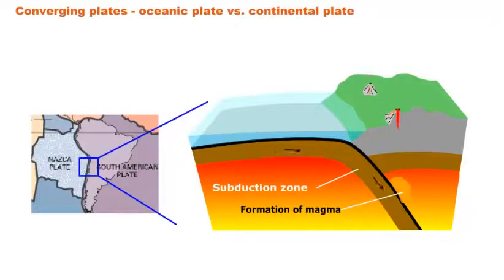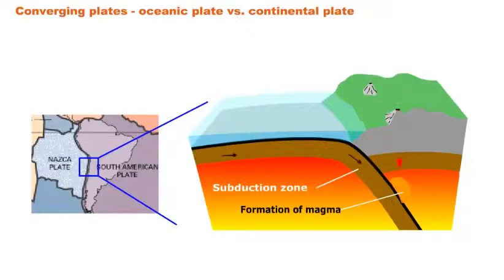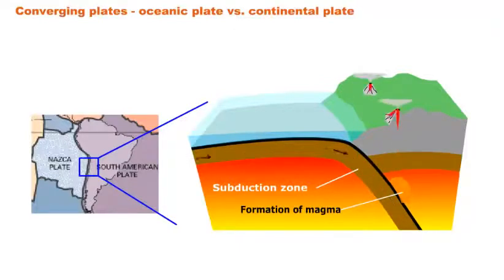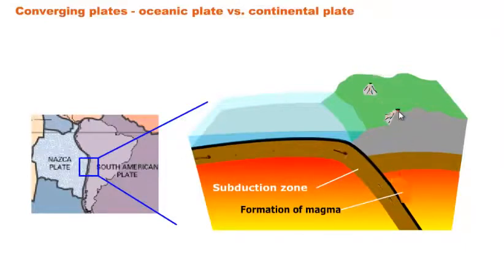Along the west coast of South America, the oceanic Nazca Plate is subducted below the continental South American Plate. So here, instead of oceanic-oceanic, we have an oceanic plate versus a continental plate. This geological setting is similar to the region around Japan, except it's continental versus oceanic. Subduction occurs again, creating extra magma from melted rock, which makes volcanoes — but here the volcanoes are on a landmass, a continent.